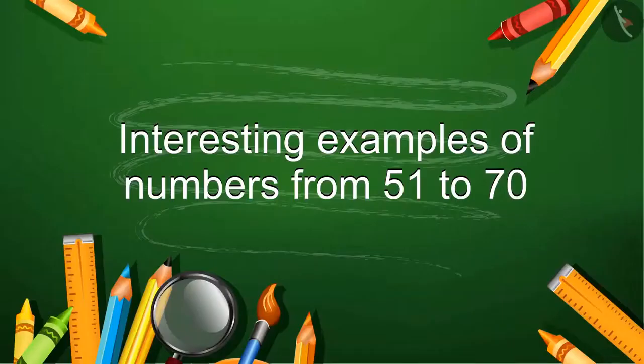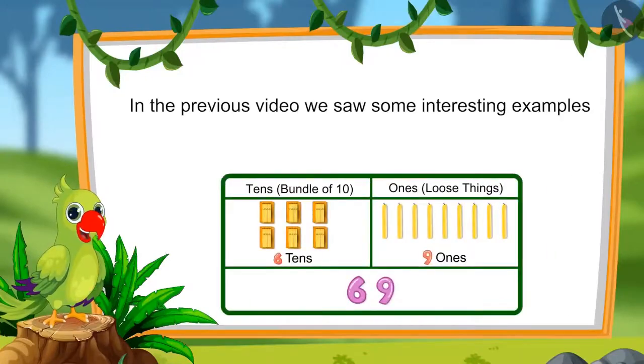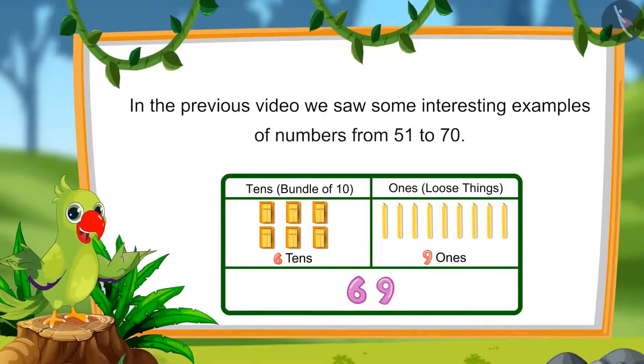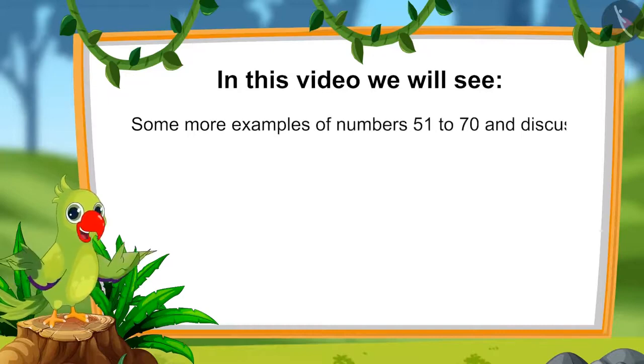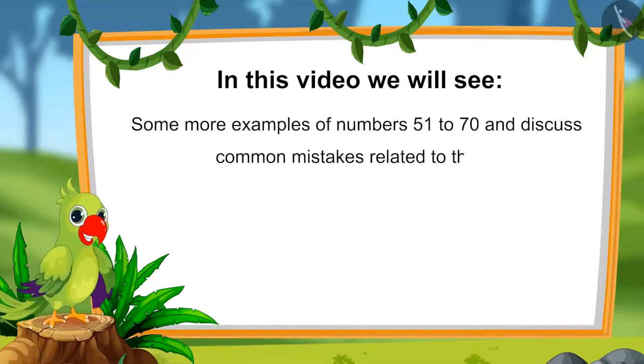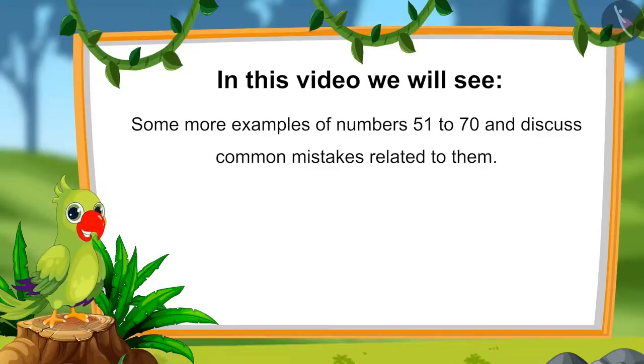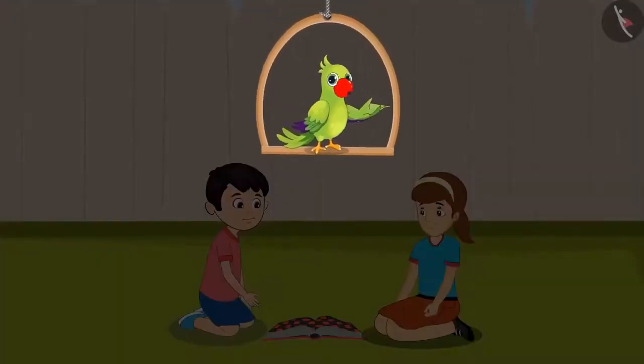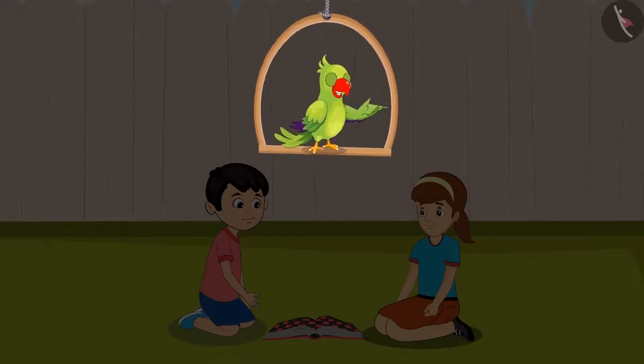Interesting examples of numbers from 51 to 70. Hello, children. In the previous video, we saw some interesting examples of numbers from 51 to 70. In this video, we will see some more examples related to those numbers. We will also discuss about the common mistakes that we should avoid. Today, Chotu and Arti are playing a game together. At the end of the game, they are figuring out who got a higher score.